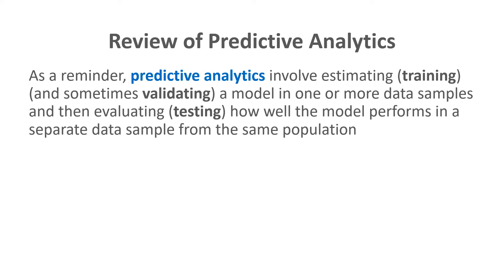With just about any model — for example, a linear regression model — we can make predictions. But that doesn't necessarily mean we're doing predictive analytics unless we take the next step and see how accurate those predictions were. We do this by estimating the model on one sample, applying it to a different sample, and then seeing how well it predicts in that second sample.